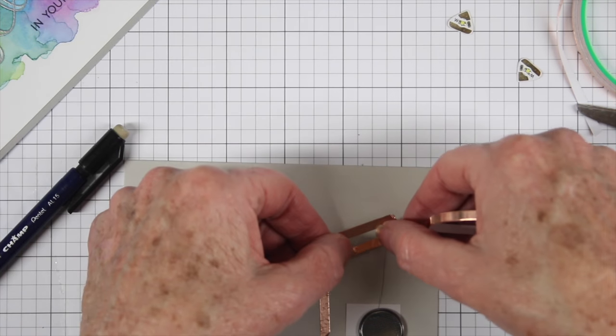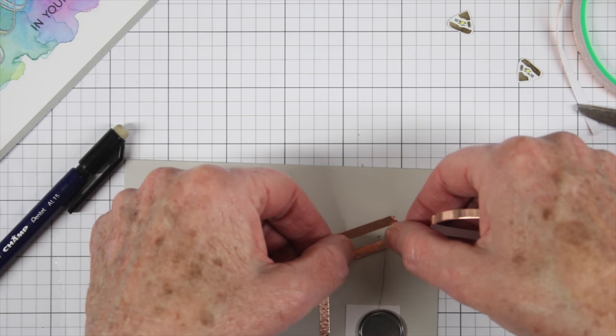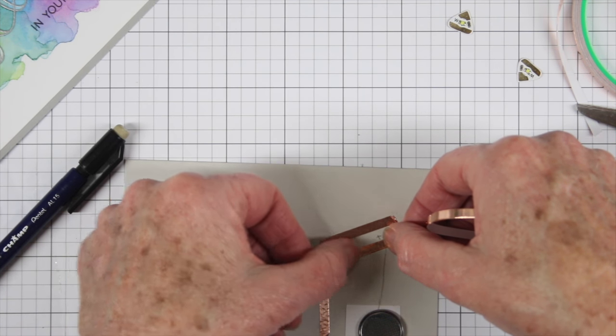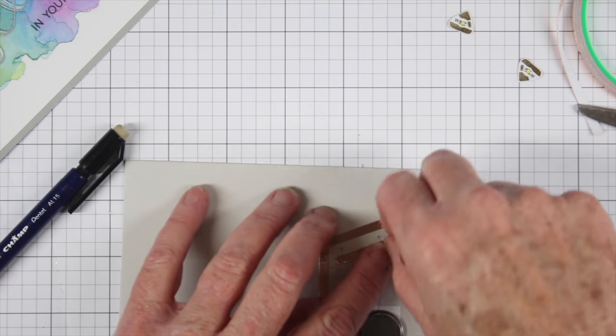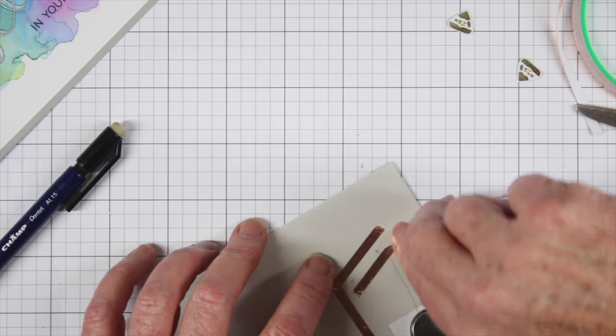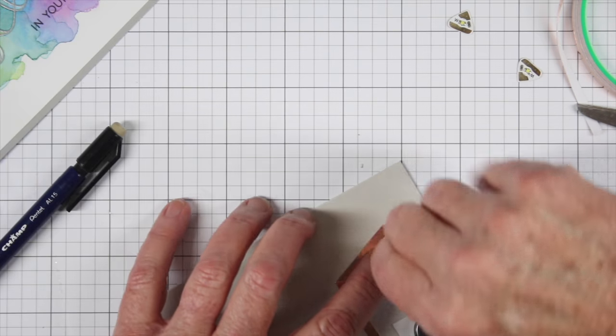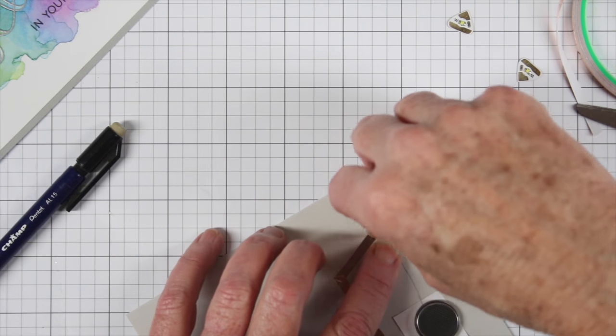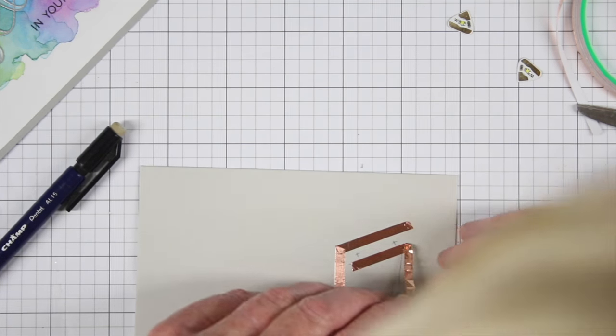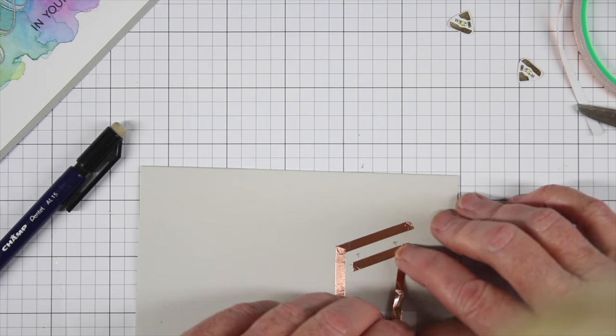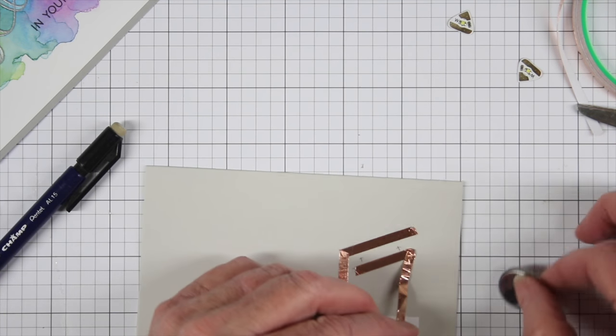So I'm going to work on my positive terminals now and I'm going to follow that line and I want to make sure that I don't touch the negative on that left side. I'll start making my bends here and I found if you go forward a little bit and then back down it works a little bit better. So I only have one bend on this.